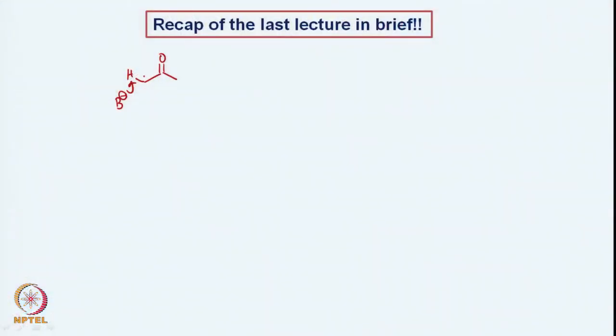We first looked at how a ketone can actually be deprotonated, and we can have the formation of the corresponding anion. That anion can be in equilibrium with the original ketone depending on various factors such as the acidity of the proton alpha to the carbonyl and also the strength of the base. And this will be in a kind of resonance form with the O⁻.